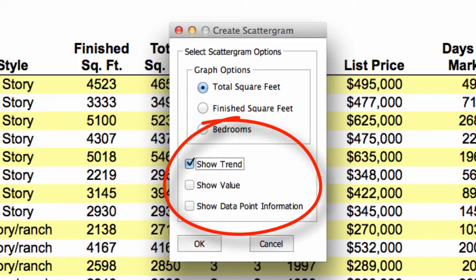Down below here, we can decide if we should create the trend line, show value boxes, and or the data point information. For scattergram, I almost always will create the trend line when I take my first look at things. So let's look at that.